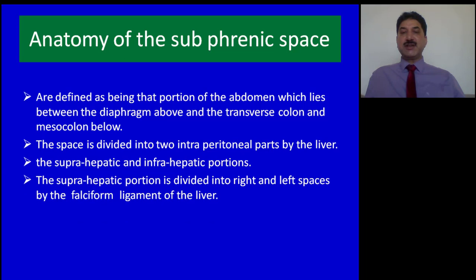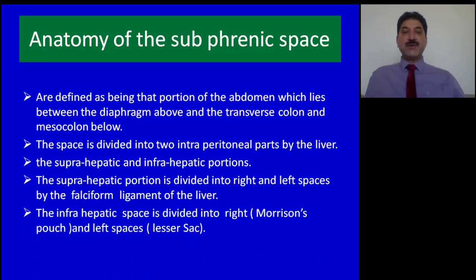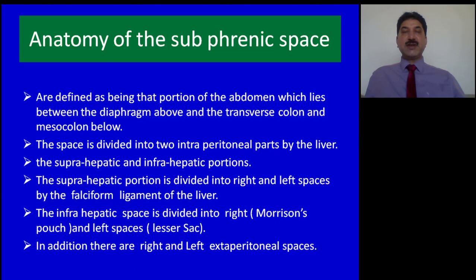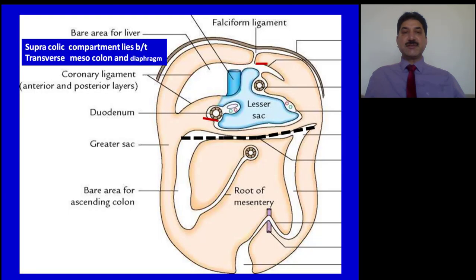The suprahepatic portion is divided into right and left spaces by the falciform ligament of the liver, which divides the liver into right and left anatomical lobes. The infrahepatic space is divided into the right posterior subphrenic space, also called Morrison's pouch or hepatorenal pouch of Morrison, and the left space, also called the left posterior or lesser sac. In addition, there are right and left extraperitoneal spaces.